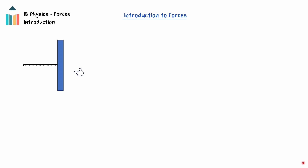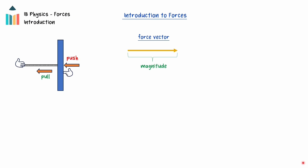Forces are any influence that causes a change in an object's motion or shape, commonly defined as pushes or pulls. They are instrumental in analyzing motion. Forces are vector quantities, so they can be represented by arrows, with the length of the arrow representing the magnitude of the force and the direction of the force demonstrated by the arrow head. The SI unit of force is the Newton, which is a derived unit equal to a kilogram meter per second squared.